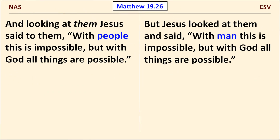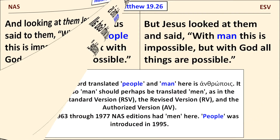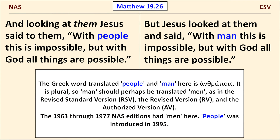We'll move next to Matthew chapter 19, verse 26. Here the ESV has man, while the NAS goes with people, which is rather different from what we've come to expect. The Greek word translated people and man here is anthropos — it's a plural form of the word man. The 1963 through 1977 NAS editions had men here. People was introduced in 1995.